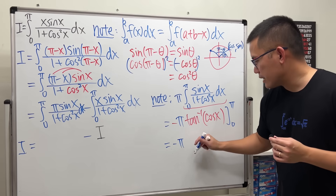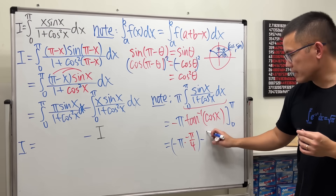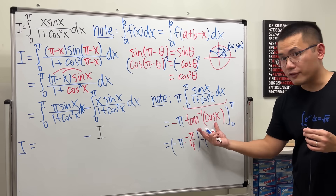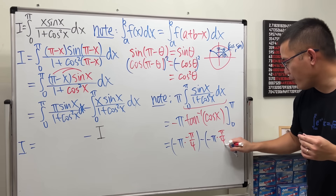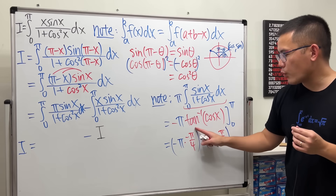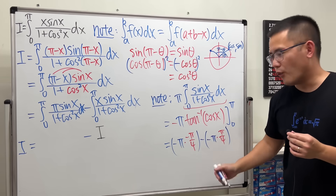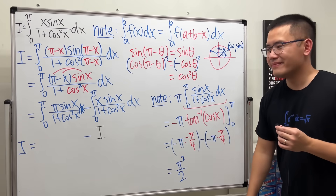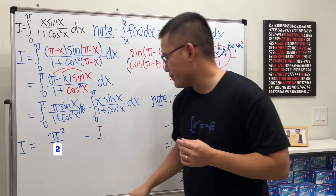Then subtract the value at 0: cos(0) = 1, arctan(1) = π/4, and with the negative sign it's −π/4. Be careful: this gives π·(π/4) − π·(−π/4) = π²/4 + π²/4 = 2π²/4 = π²/2. So the first integral equals π²/2.